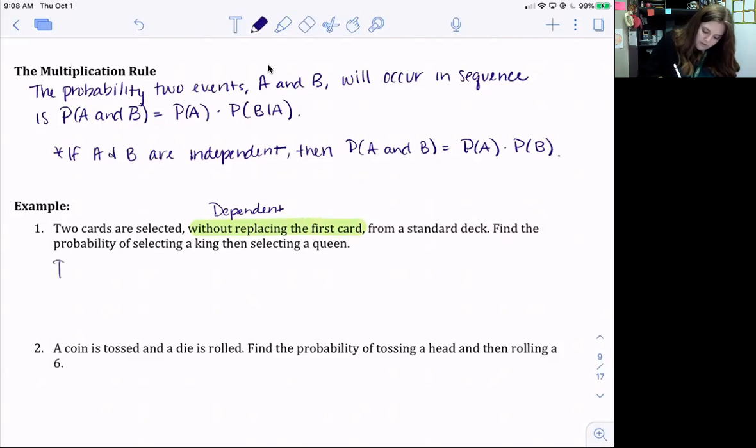Okay, so we're finding the probability of getting a king and a queen. The probability of getting a king would be 4 out of 52 cards. Then we want to look at the queen. Well, we know there's 4 queens in a deck, but since we didn't replace the first card, we're going to be left with 51.